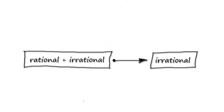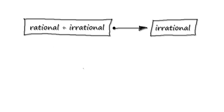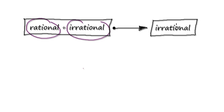In this video, we're going to look at proof by contradiction. We're going to try and prove that when you add a rational number to an irrational number, the answer will always be an irrational number.